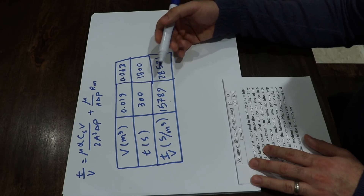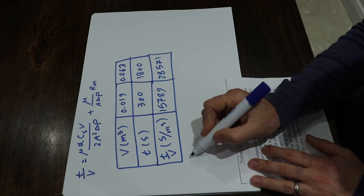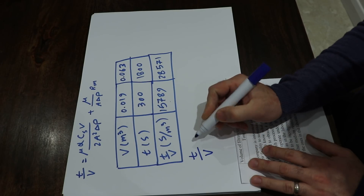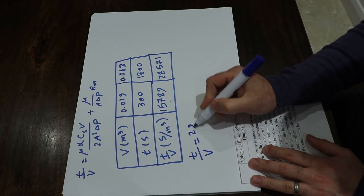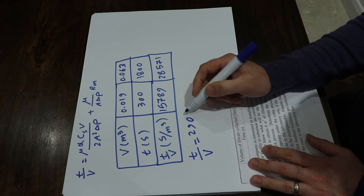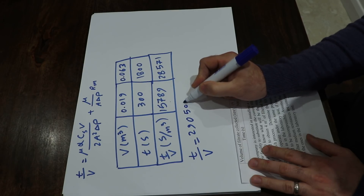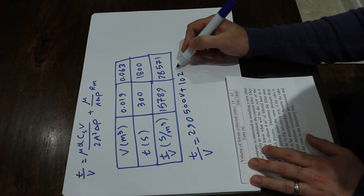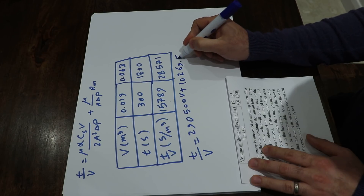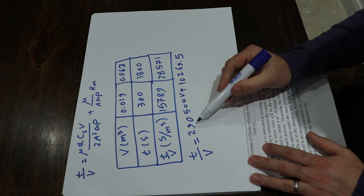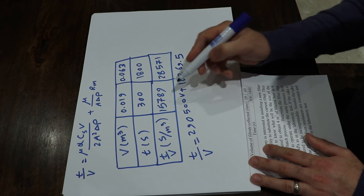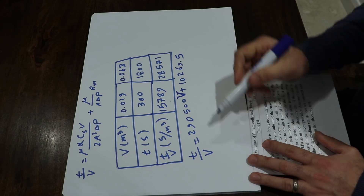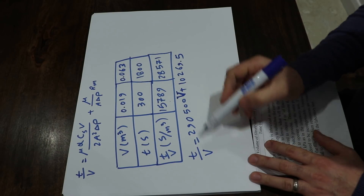Using these two data points, you can obtain the linear equation connecting them. Doing so gives: T/V = 290,500·V + 10,269.5.